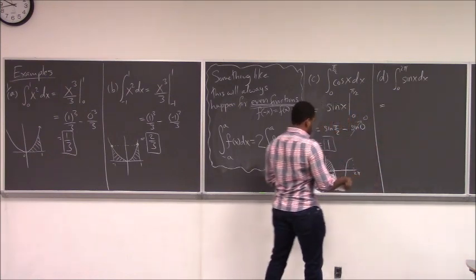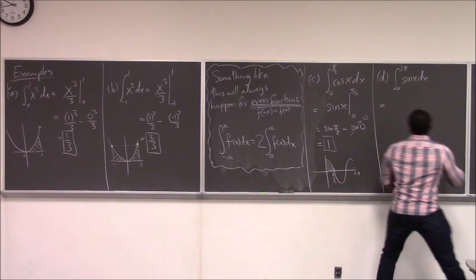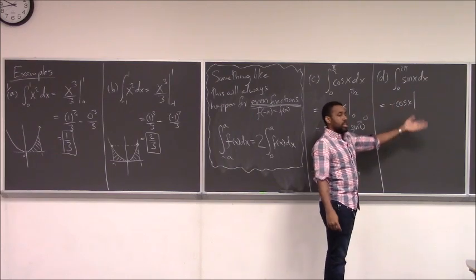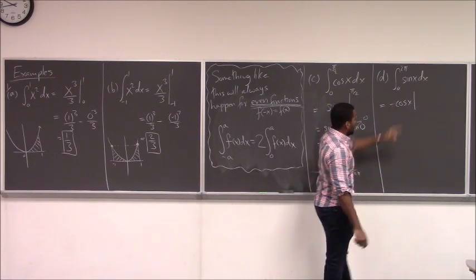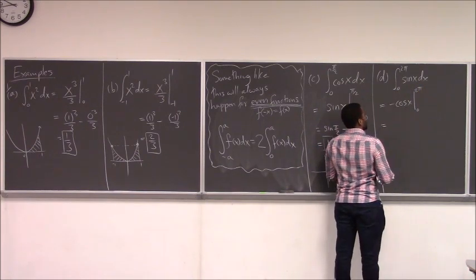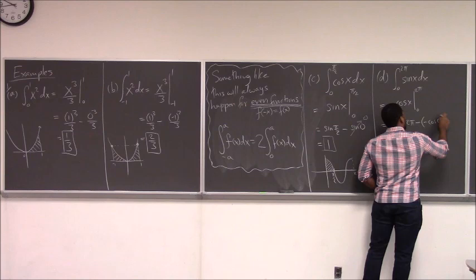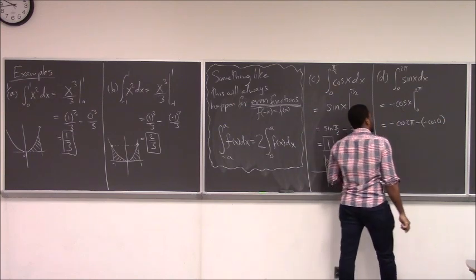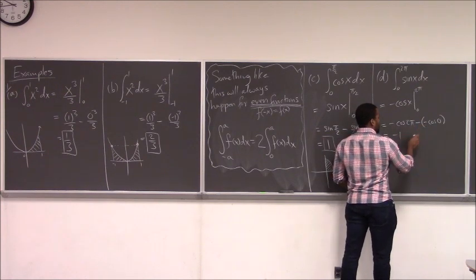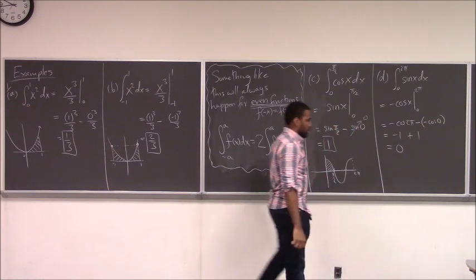For example 1D, the anti-derivative of sine of x is negative cosine of x — because differentiating negative cosine gives minus minus sine, which is sine. This integral is between zero and 2π. So we compute negative cosine of 2π minus negative cosine of zero. Cosine of 2π is one, so it's negative one; plus cosine of zero, which is one. This actually gives you zero.